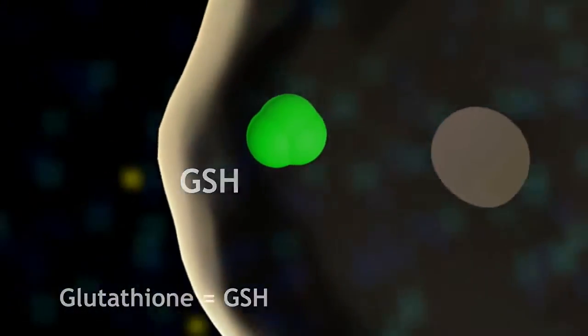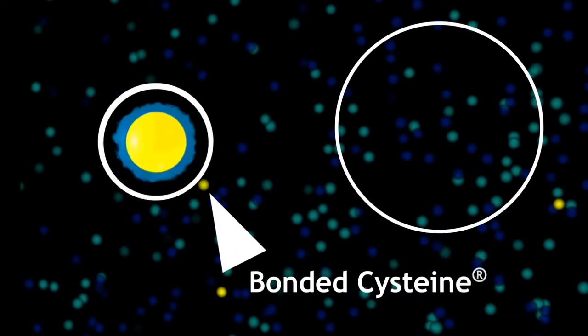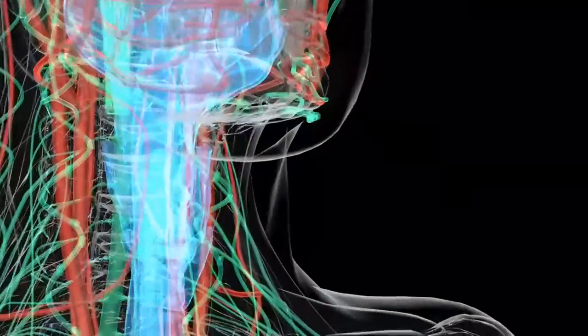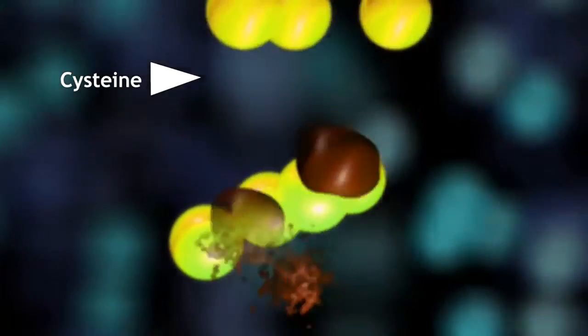Most of these precursors are easy to get from our diet, but the one that is in very limited supply is bonded cysteine. Regular cysteine isn't very effective because it doesn't survive the trip very efficiently from your mouth to your cells.